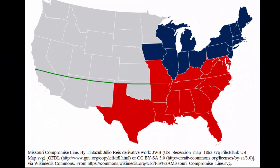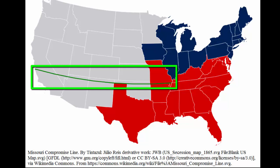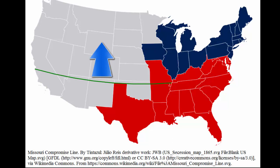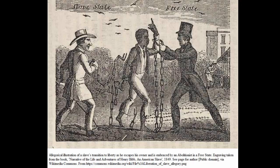Once again the dispute was settled with a compromise. The Missouri Compromise ensured that the balance of power between southern slave and northern free states would be maintained by allowing Missouri to enter as a slave state, but admitting Maine as a free state, thereby keeping the number of slave and free states even. Going further, it created an imaginary line across Louisiana that demarked the border between slave and free territories — all territories above the line would be free, and those below slave. Neither side was really happy with the decision, but it kept the peace and allowed us to continue to expand our territory.